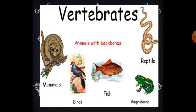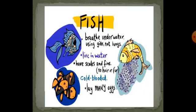Vertebrates are animals with a backbone. For example, mammals, birds, fish, amphibians, and reptiles. Fish breathe underwater using gills, not lungs, and they live in water. Fish have scales and fins; they don't have hair or fur. They are cold-blooded animals and they lay many eggs.